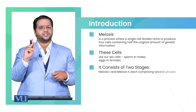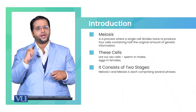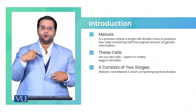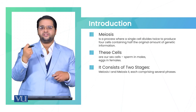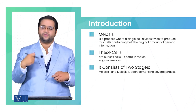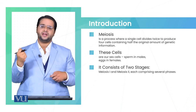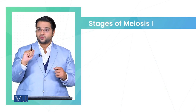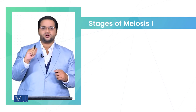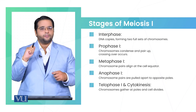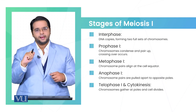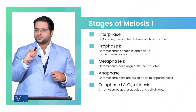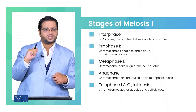Meiosis consists of two stages: meiosis 1 and meiosis 2. Meiosis 1 consists of four stages: prophase 1, metaphase 1, anaphase 1, and telophase 1.